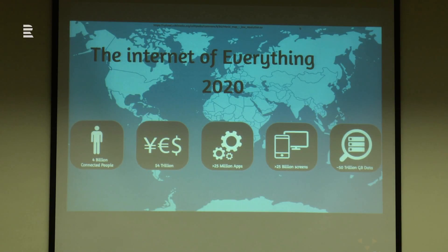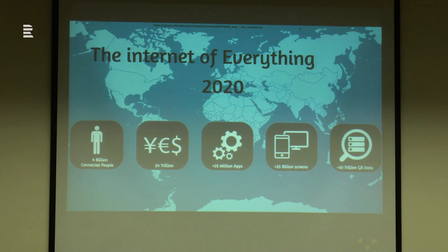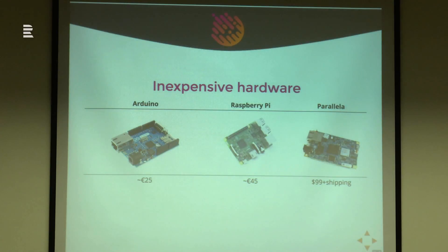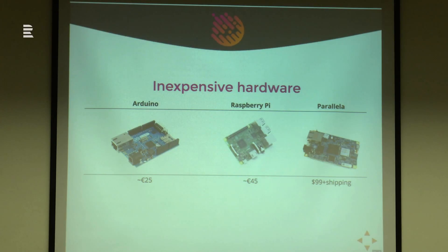Going into the internet of everything: there are 4 billion people around the world, we spend about 4 trillion dollars every year on all our devices, there are 25 million apps, and this is all about 2020. Each person will have about 5 screens and we will move 50 trillion gigabytes of data per week. But we're not there yet — what can we do now? There is inexpensive hardware like the Arduino, the Raspberry Pi, or even the Parallela with 16 cores for 100 euros, giving you computing power to hook up to sensors and send data for processing.